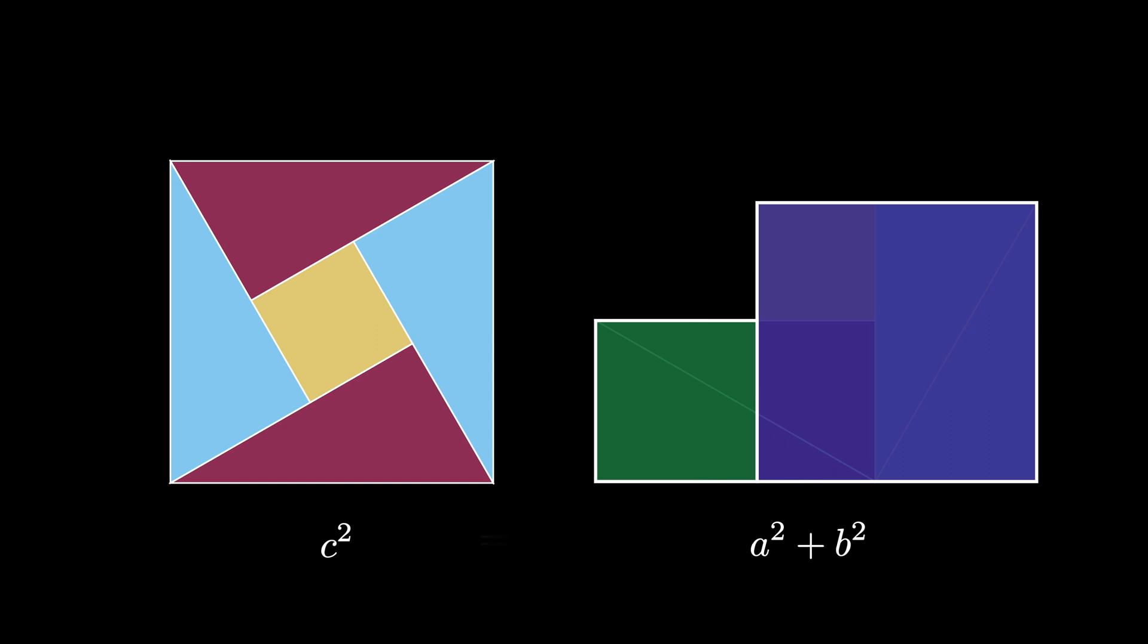But because these two diagrams contain the same amount of area, we conclude that C squared equals A squared plus B squared.